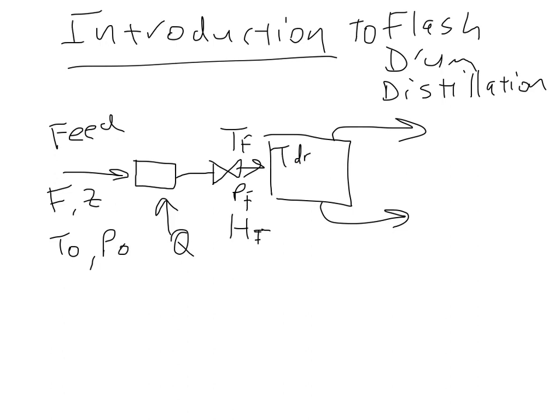And then we have T drum, P drum, or the pressure and temperature of the drum, and it comes out and leaves with flow rates L and V, where V is the vapor flow rate and L is the liquid flow rate. The mole fraction of the more volatile component in the vapor is Y. The mole fraction of the more volatile component in the liquid is X, and HV bar and HL bar because those are per mass. That's the typical setup we have here.